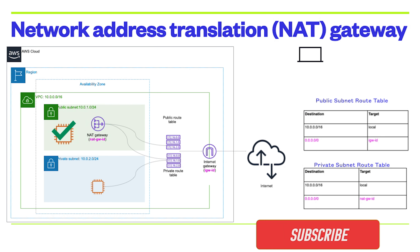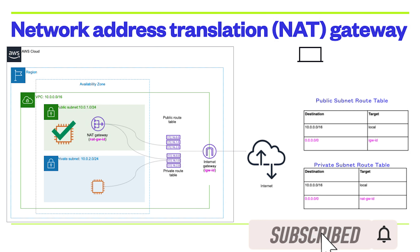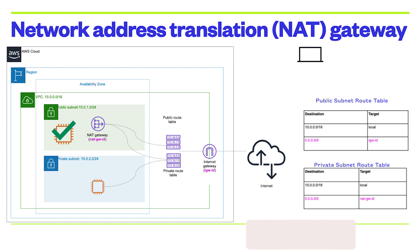What if our EC2 in the public subnet wants to access the Internet? To do this, we need a service called NAT Gateway. A NAT Gateway enables your instances in the public subnet to access the Internet and to be accessed from the Internet.